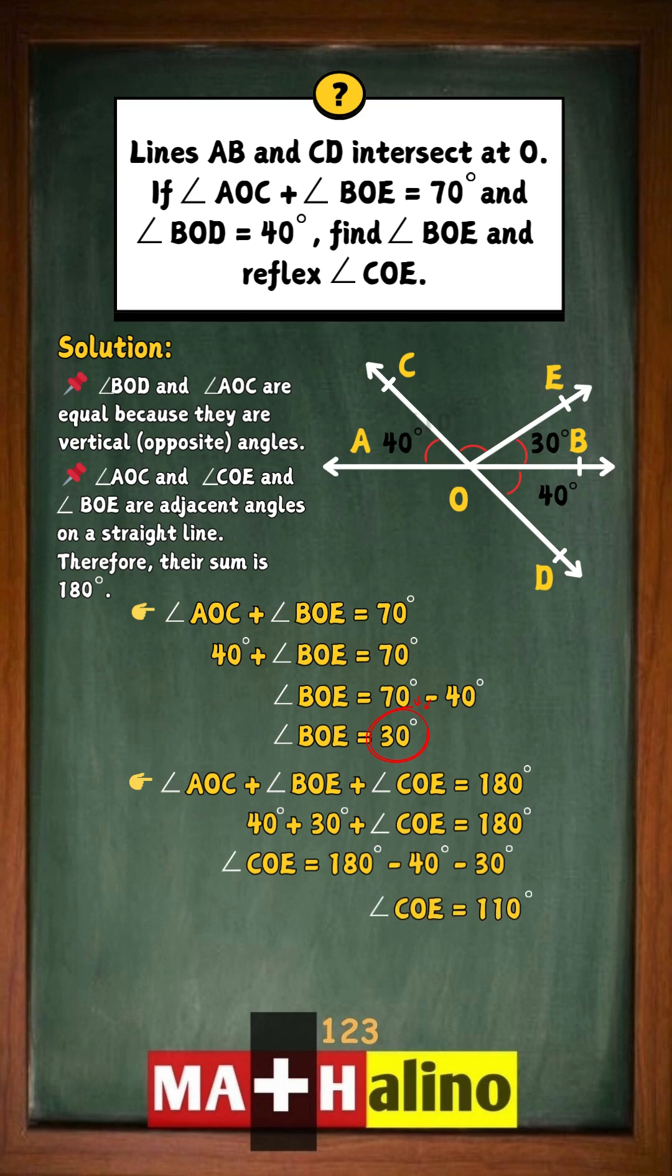Finally, to find the reflex angle COE, we subtract from a full circle. 360 minus 110 equals 250 degrees.